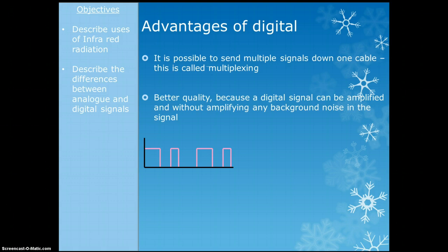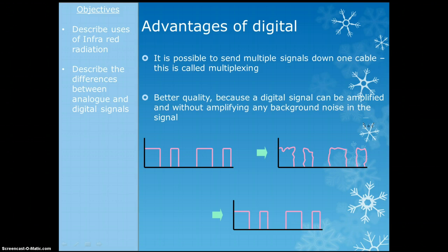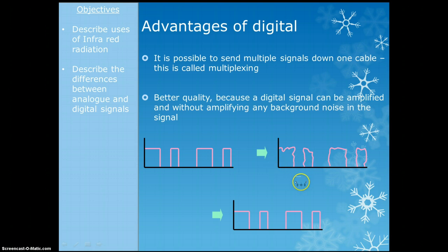Another advantage of digital is that we can amplify it without getting any background noise in the signal. Whenever we send a signal, there will be some noise and it'll get a bit distorted — it might end up wobbly, a bit lower amplitude. But with a digital signal, I know it can only be on or off, so all this noise doesn't matter. Even though it's a bit wobbly, it's clearly on in one place and clearly off in another. It's really easy to get past this noise and still get all the information through.